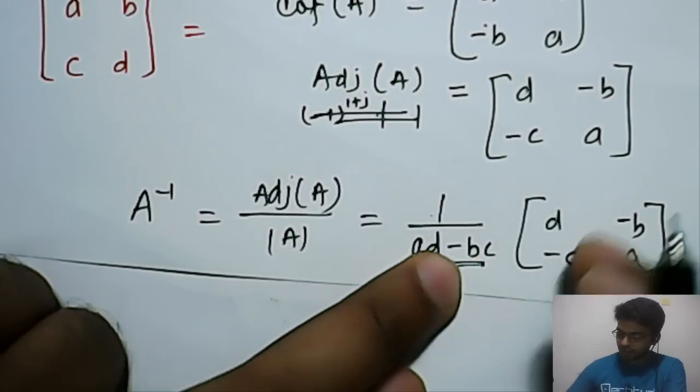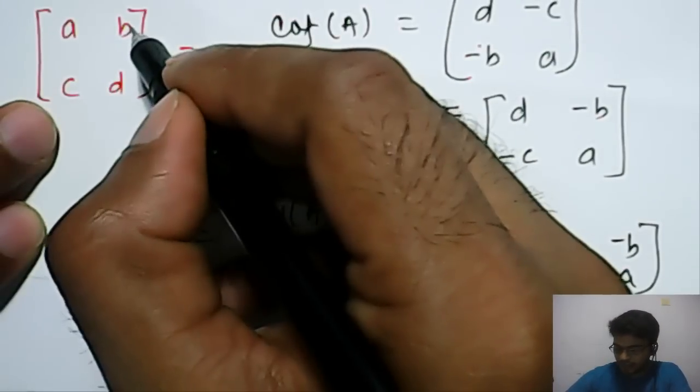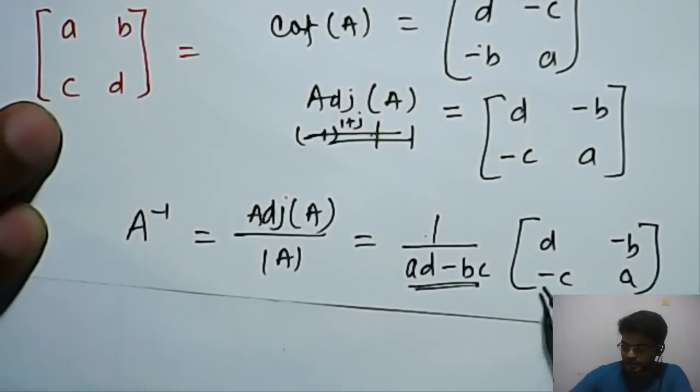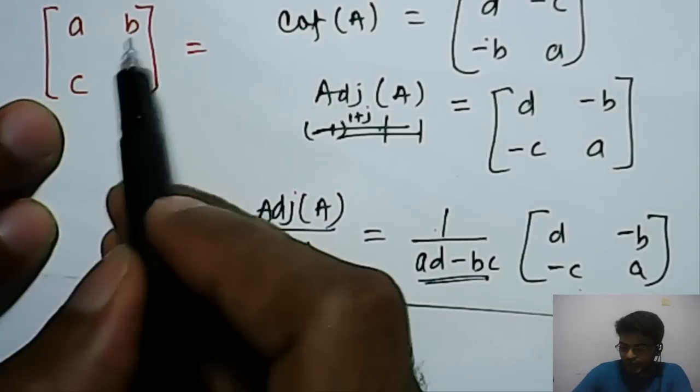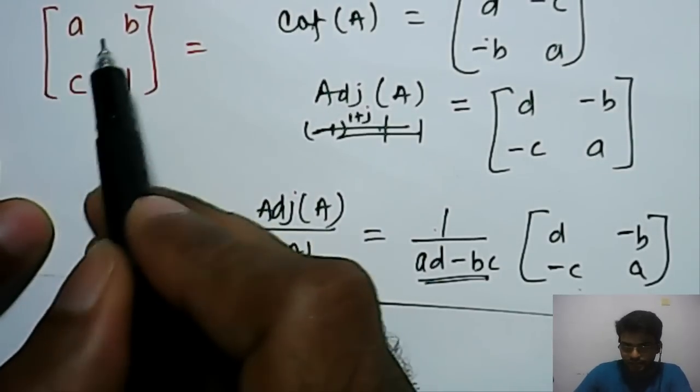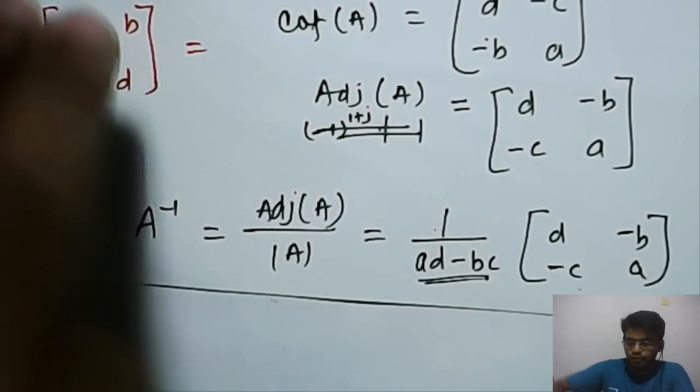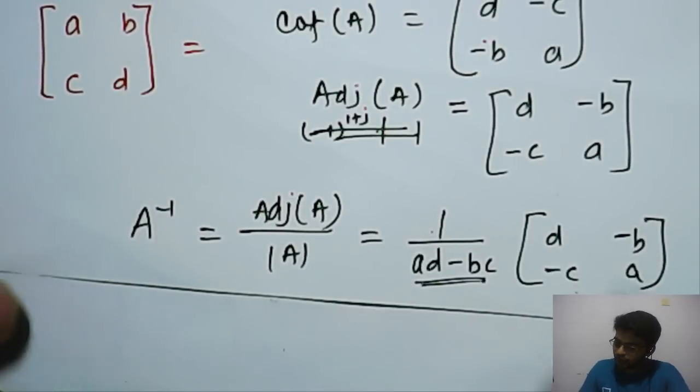So, now, if you see, in the original matrix, this diagonal will remain same. So, this diagonal will remain same. But, the negative sign will be applied. So, the diagonal, this diagonal will remain same and we will add just negative sign and we will exchange this diagonal. So, this will come here and this will come here.